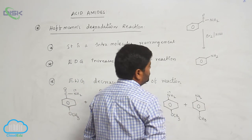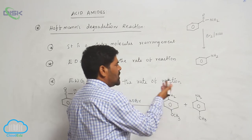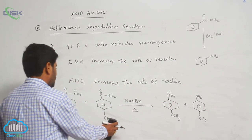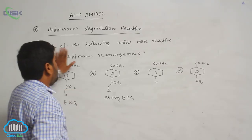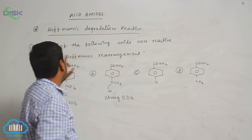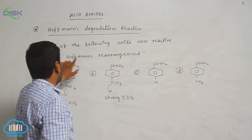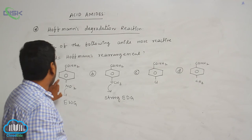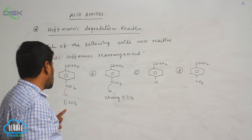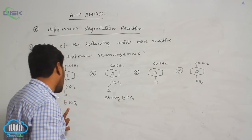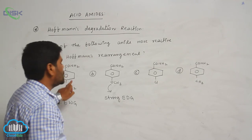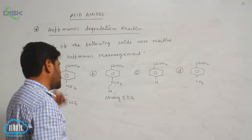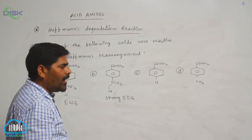For example, benzamide converts into aniline via Hofmann's rearrangement. When comparing reactivity, a nitro-substituted amide is less reactive because the nitro group is electron-withdrawing, which retards the chemical reaction and decreases the rate of amine formation.